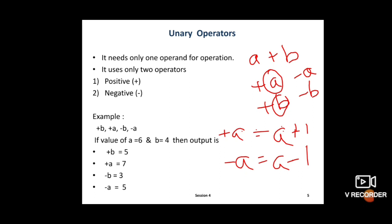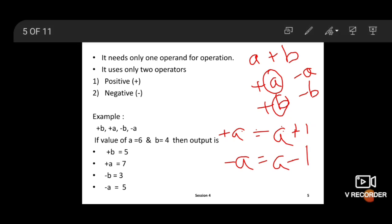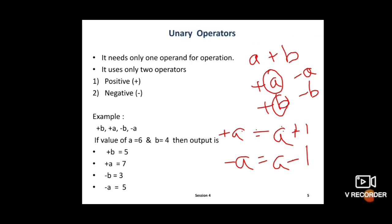Output of -A is 5. Understood? What is the unary operator? Just remember: +A means increment 1 in previous value; minus means decrement, subtract 1 from previous value. Unary operators need only one operand.